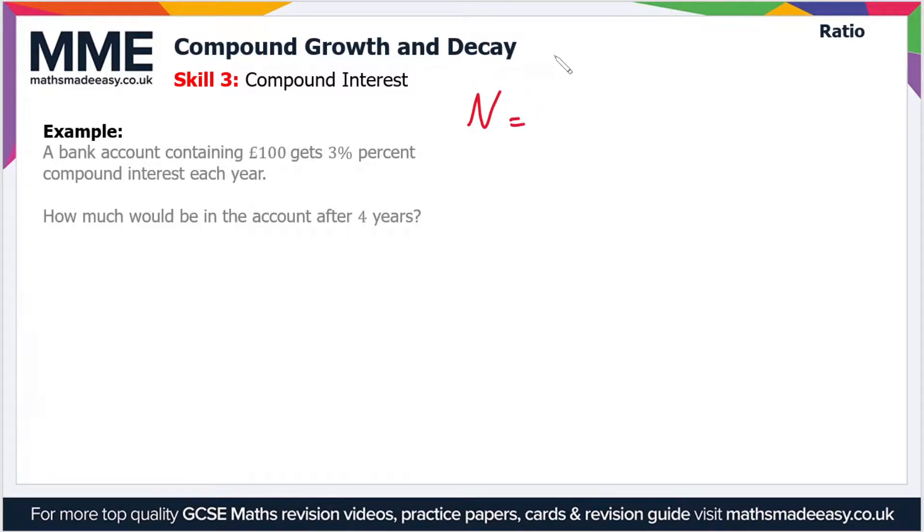So it's N, the amount after a given time period, equals N₀, the original amount, times 1 plus or minus, depending on whether it's growth or decay, the percentage divided by 100, to the power of n, where n is the number of time periods. That's a lowercase n this time.